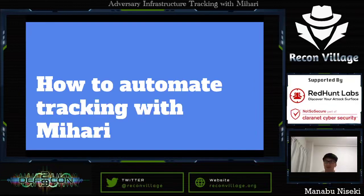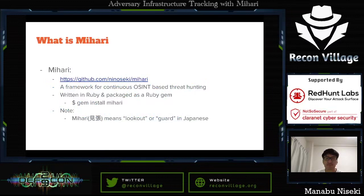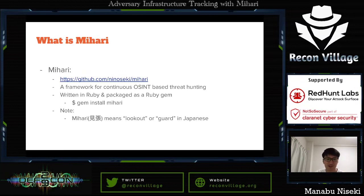I'd like to demonstrate how to automate tracking tasks with a tool named Mihari. Mihari is a framework for continuous OSINT-based threat hunting. It is a tool to automate passive tracking tasks. It is written in Ruby and packaged as a Ruby gem, so it's very easy to install.